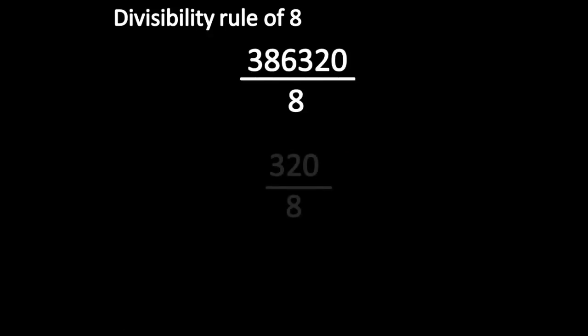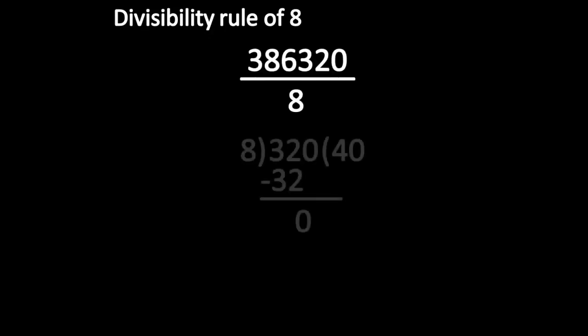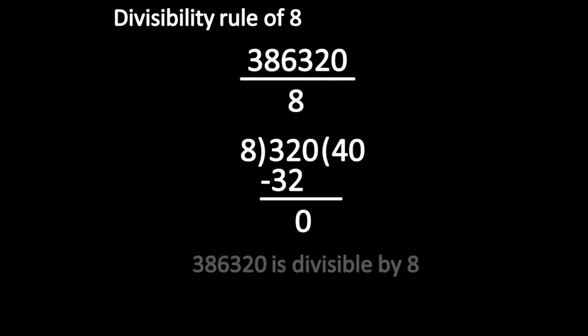Let us see the next divisibility rule of 8. Instead of taking the whole number, take only the last three digits and divide by 8. Here the remainder is 0, so this number is divisible by 8.